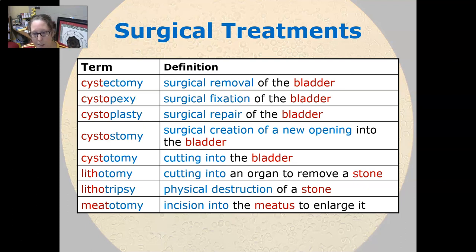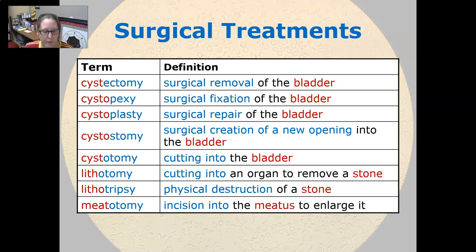Meatotomy is the incision into the meatus to enlarge it. The meatus is the hole that the urethra empties to the outside — it is the opening of the urethra.